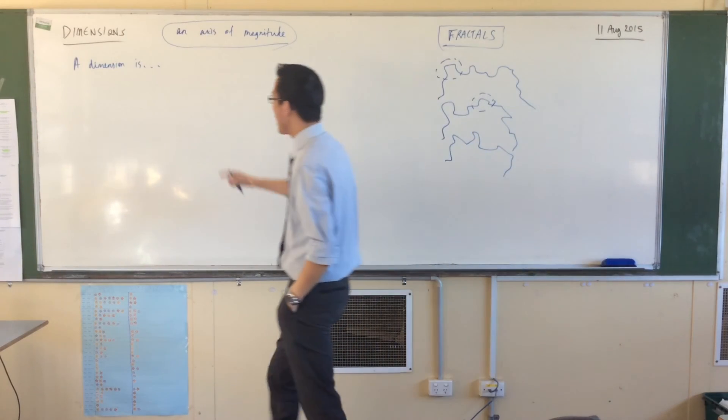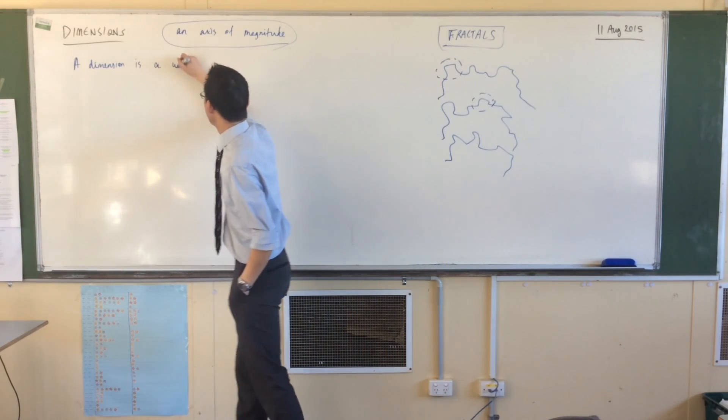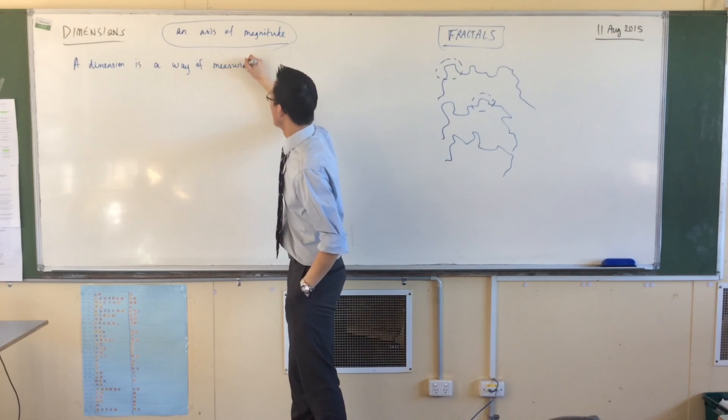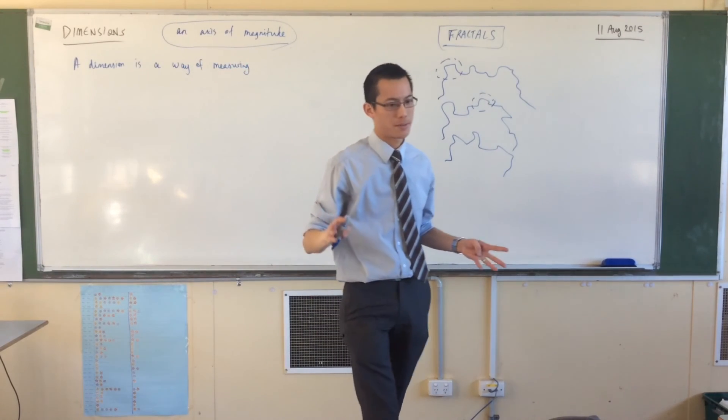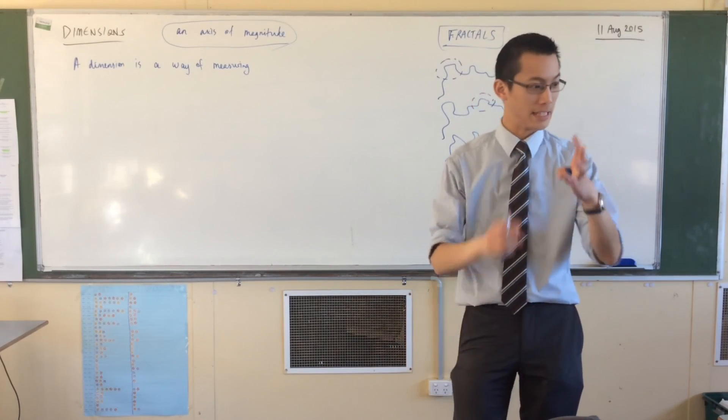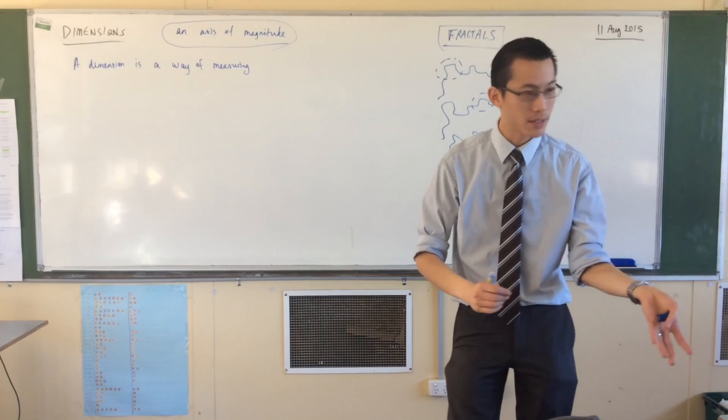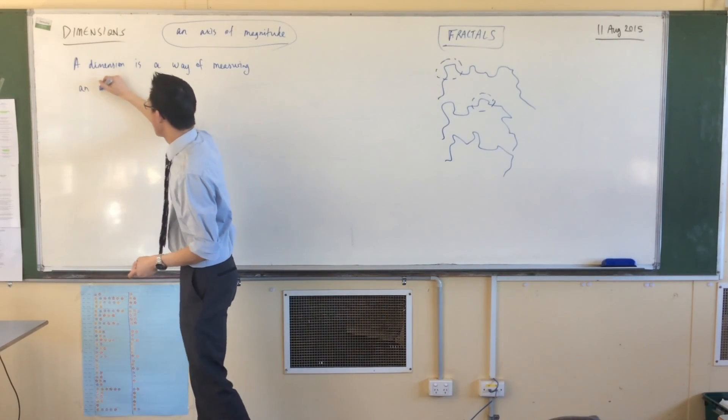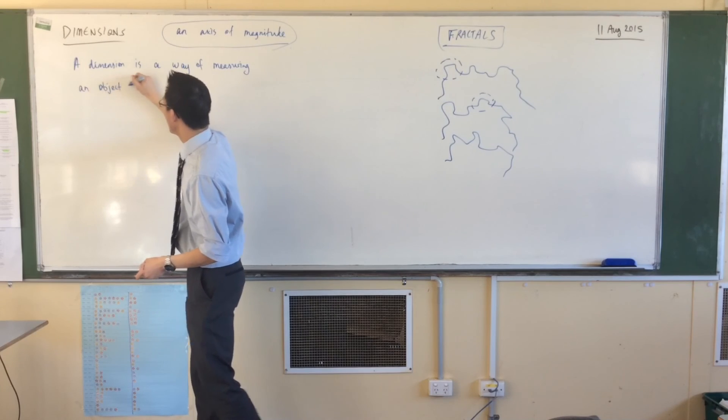A dimension is a way of measuring one of two things. Either you can say an object or what we call, this is a technical word by the way, a space. So a dimension is a way of measuring an object or a space.